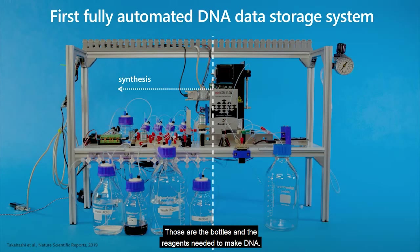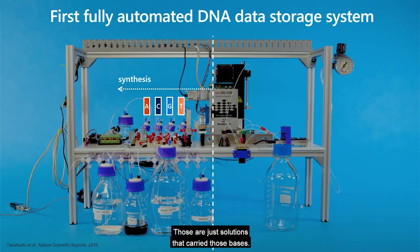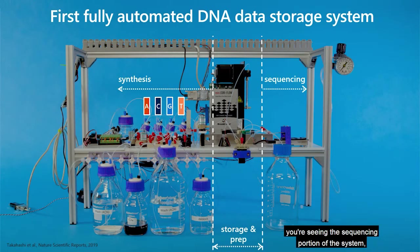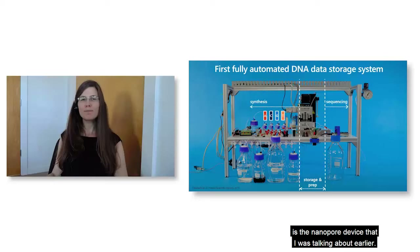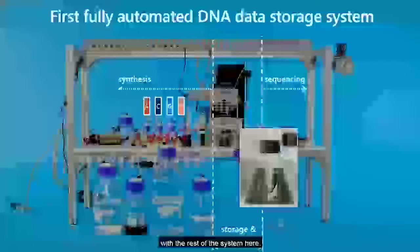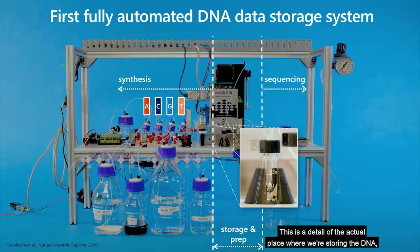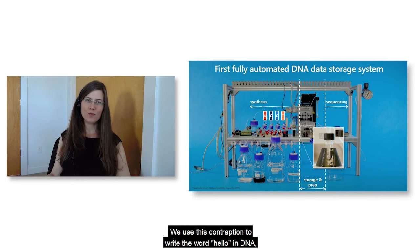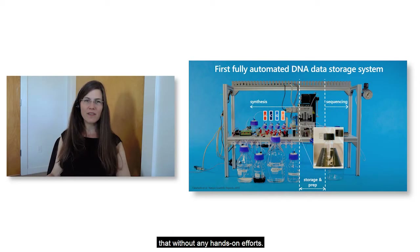On the left-hand side you're seeing a bunch of bottles — the reagents needed to make DNA. Those four smaller bottles in the back are the four different bases, just solutions that carry those bases. In the middle is the storage and preparation unit. On the right-hand side is the sequencing portion, featuring the nanopore device integrated with the rest of the system. In the storage area, the DNA is stored at the bottom of a tube. We used this contraption to write the word 'hello' in DNA and were able to fully recover it without any hands-on effort — fully automated.